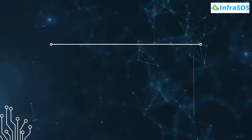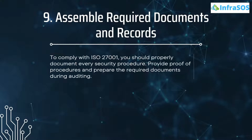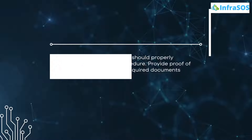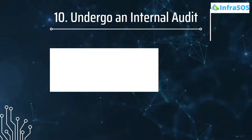Number nine is to assemble the required documents and records. To comply with the ISO 27001 standard, you should properly document every security procedure, provide proof of the procedures, and prepare the required documents during the auditing process. Number ten is to undergo an internal audit.